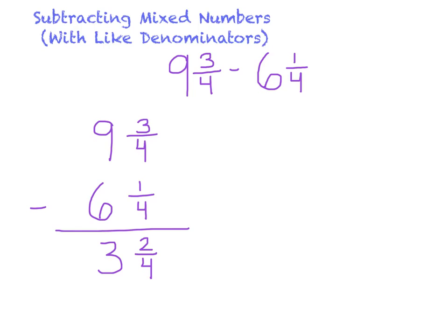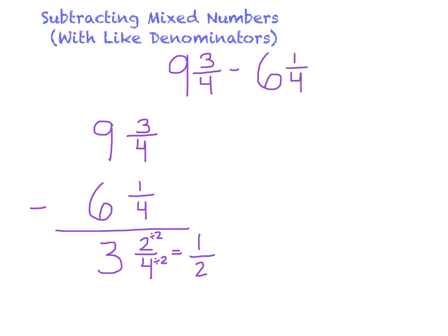Lastly, we want to always check to see if we can simplify our fraction. Both our numerator and our denominator are divisible by 2. 4 divided by 2 is 2, and 2 divided by 2 is 1. So 3 and 2/4 simplifies to 3 and 1/2.